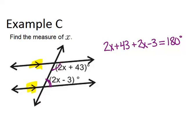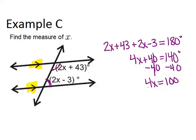Now that I know that, I can solve this using algebra skills. Combine like terms and get 4X plus 40 equals 140 degrees. Next, minus 40 from both sides. 4X equals 100. Finally, divide by 4, and you get X equals 25.